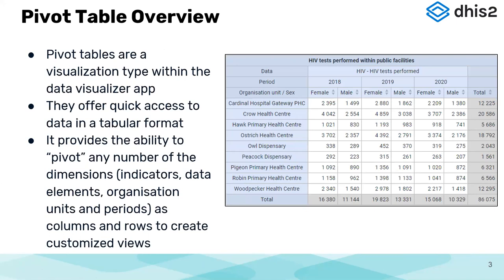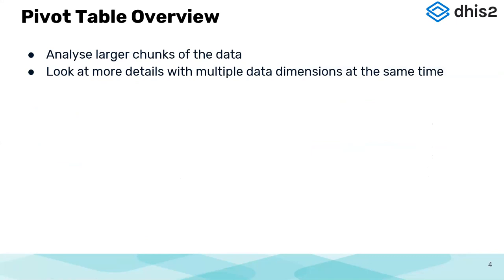Moving on to pivot tables — as the name says, it's a table with rows and columns, a visualization type. Anyone familiar with Excel and other spreadsheet tools will have used pivot tables before. What 'pivot' means is you can change the number of dimensions in the table — you can change any number of dimensions, add them to columns, and change them to rows. That is why we call it a pivot table. It is a good analytic tool, especially used when you have to analyze larger chunks of data and when you have multiple dimensions within your analysis. Unlike charts and maps, pivot tables can handle big numbers of data dimensions.